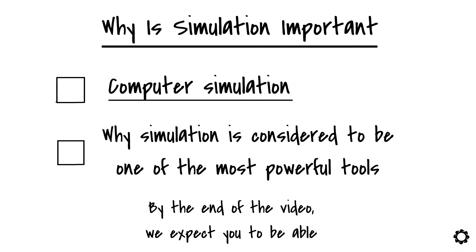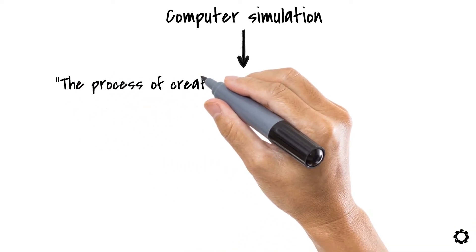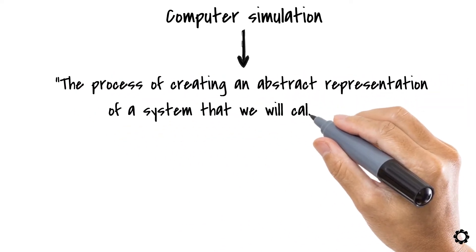Let's go ahead. Strictly speaking, a computer simulation can be defined as the process of creating an abstract representation of a system that we will call a model.